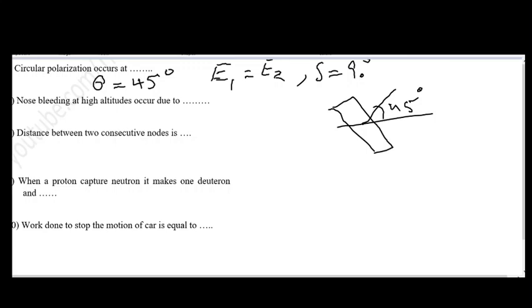Question number seven is stated as nose bleeding at high altitudes occur due to. The reason for this nose bleeding is as we go up from the sea level, density of oxygen decreases and this makes air thinner, and this thin air causes the inside of nose to bleed. So the decrease in density of oxygen is the main cause of this nose bleeding.